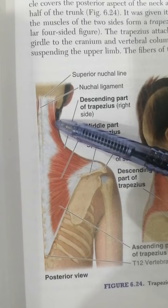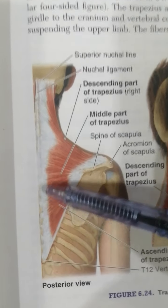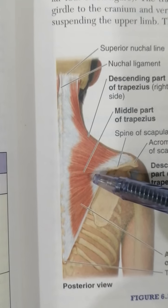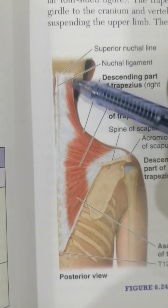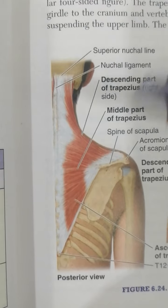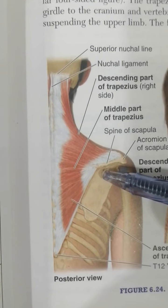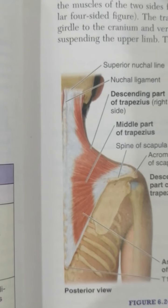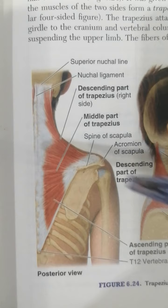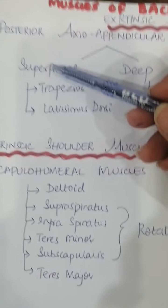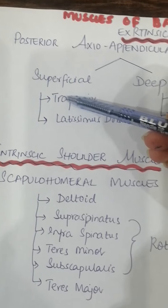Trapezius is a large triangular muscle visible on the posterior aspect of the neck, covering the superior half of the trunk. It was given its name because it looks like a trapezium. It also attaches the pectoral girdle to the cranium and vertebral column, and assists in suspending the upper limb. It is divided into the same three parts: descending fibers, middle fibers, and ascending fibers, each with different functions. The nerve supply of the trapezius is the spinal accessory nerve.